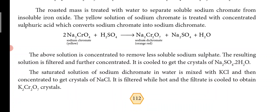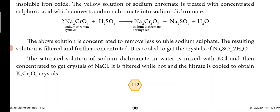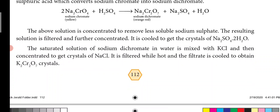The yellow color of sodium chromate is converted into the orange-red color of sodium dichromate. This solution is concentrated to remove less soluble sodium sulfate, then filtered and cooled to get crystals of sodium sulfate dihydrate. The saturated solution of sodium dichromate in water is then mixed with KCl and concentrated to crystallize out sodium chloride.